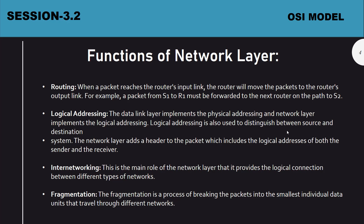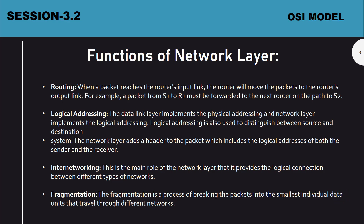The next function is inter-networking — the network layer provides logical connections between different types of networks, allowing a device in one network to transfer data to a device in another network. Then there is fragmentation: the process of breaking packets into the smallest individual data units so they can travel through different networks. In summary, the network layer moves data from one host to another using routing, logical addressing, inter-networking, and fragmentation.